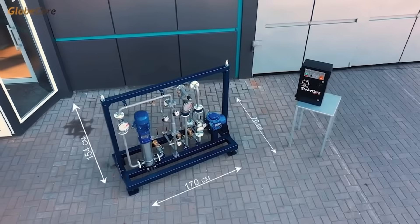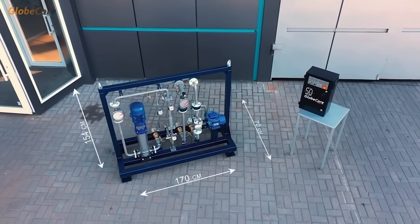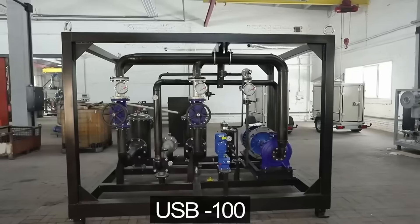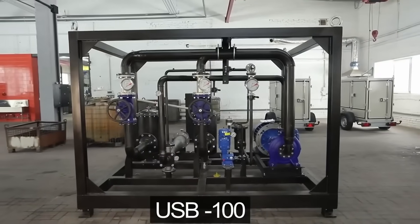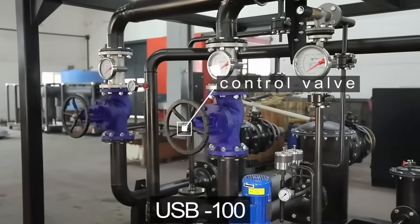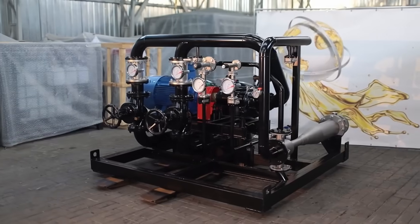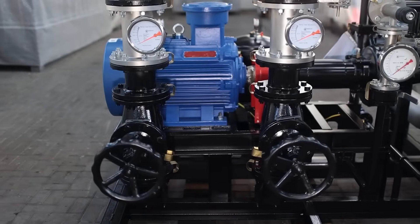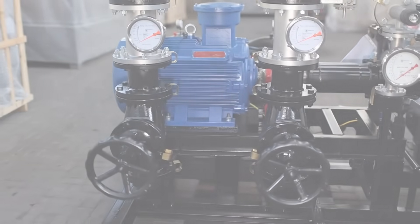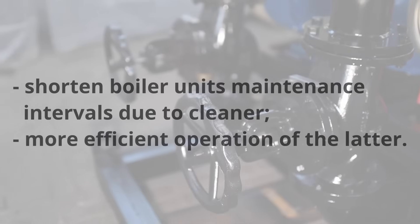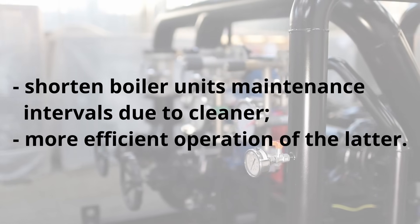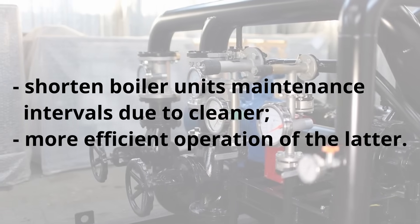A distinguishing feature of USB homogenizers is their compactness. Even homogenizers with a productivity of 100 cubic meters of emulsion per hour take up little space and are easily transported to the work site.